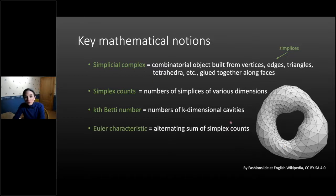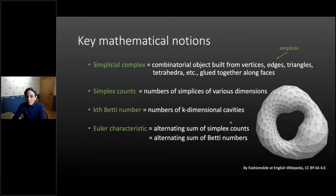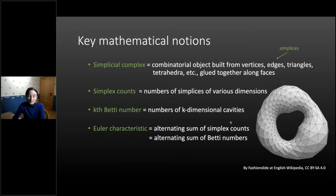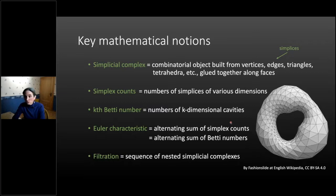An interesting global descriptor of a simplicial complex is its Euler characteristic, which is simply the alternating sum of the simplex counts. What is mathematically magical here is that the alternating sum of the simplex counts equals the alternating sum of the Betti numbers. So the number of vertices minus the number of edges plus the number of triangles minus the number of tetrahedra, etc., equals the number of connected components minus the number of loops plus the number of two-dimensional cavities, and so on. This is simple to define but a very powerful global descriptor. The final key mathematical notion is the filtration — a sequence of nested simplicial complexes, where you just keep adding new vertices, edges, and triangles — and it is when you have such nested simplicial complexes that you can apply the machinery of TDA.